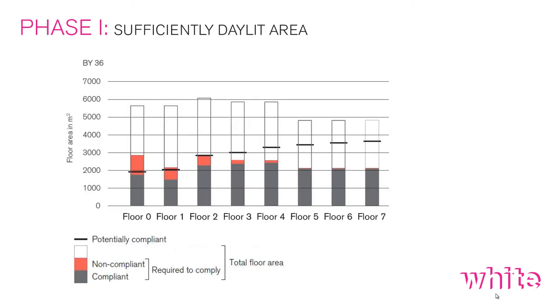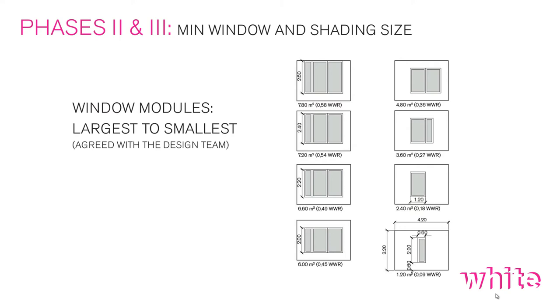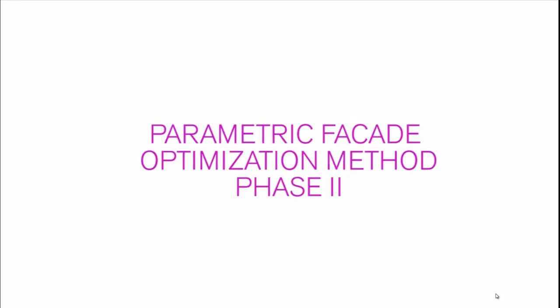Once we ensure all areas in the floor plans can comply with daylight, we move on to phases two and three, where we set the minimum window size and minimum shading size required to comply with daylight and summer thermal comfort requirements respectively. First, we sit with the architects and agree on the minimum window size, maximum window size, and all steps in between. Then we are ready to run the actual optimization.